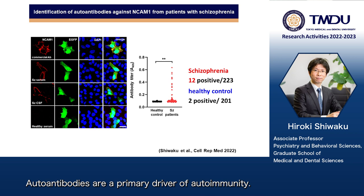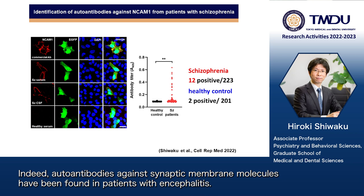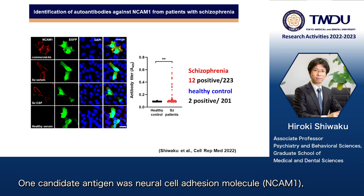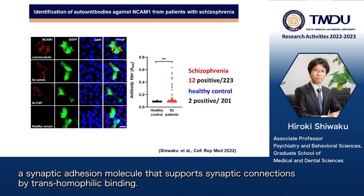Autoantibodies are a primary driver of autoimmunity. Indeed, autoantibodies against synaptic membrane molecules have been found in patients with encephalitis. To identify novel autoantibodies that may contribute to schizophrenia pathophysiology, we used a cell-based assay screening. One candidate antigen was neural cell adhesion molecule, NCAM1, a synaptic adhesion molecule that supports synaptic connections by trans-homophilic binding.